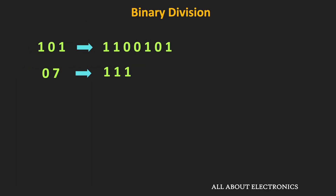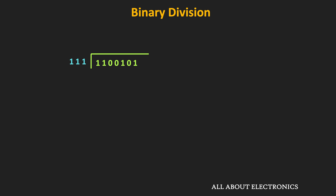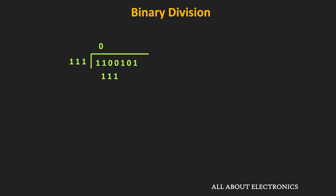Let's divide 101 by 7. In binary, 101 corresponds to 1100101 — that will be our dividend — while 7 corresponds to 111, which will be our divisor. Writing them in standard division form: since the divisor is 3 bits, we compare the first 3 bits of the dividend, which is 110. Since 110 is less than 111, we cannot perform the subtraction, so in the quotient we write 0. Considering the next bit gives us 1100, which is greater than 111, so we write 1 in the quotient. After subtraction, the result is equal to 101.